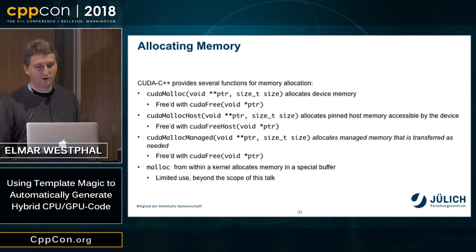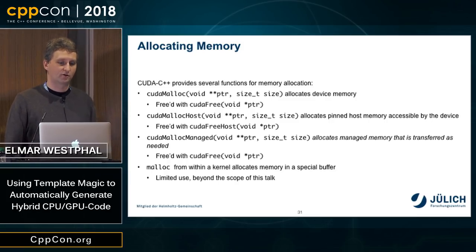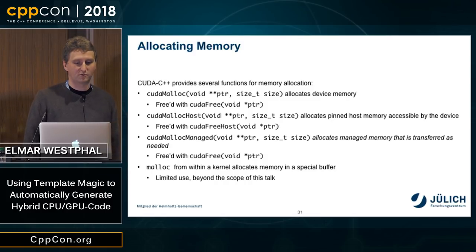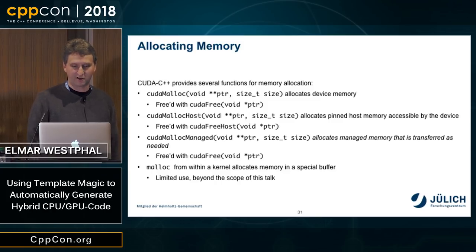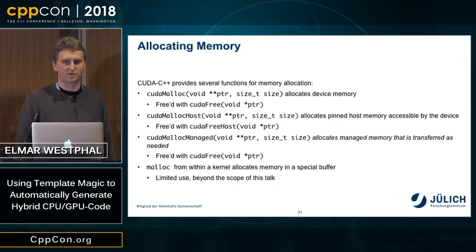When allocating GPU memory, there are different options: cudaMalloc gives device memory; cudaMallocHost gives pinned host memory; cudaMallocManaged gives managed memory — what we want here — automatically passed around between host and device. Within device code, you can also do a malloc which goes into a special buffer resulting in device memory, though it's mostly inaccessible from other contexts.